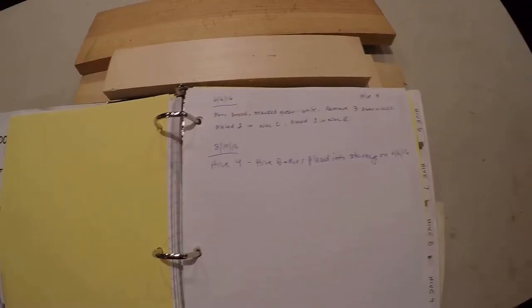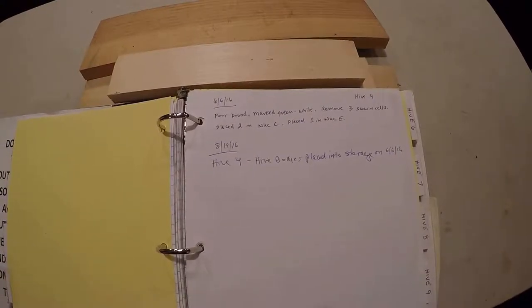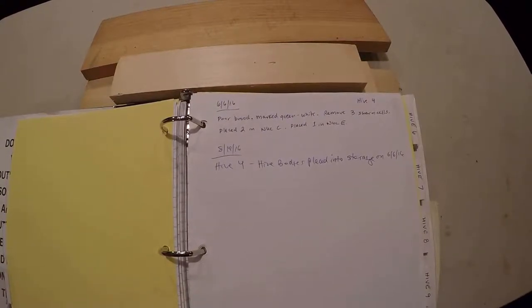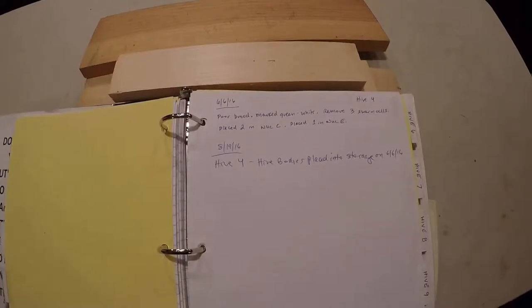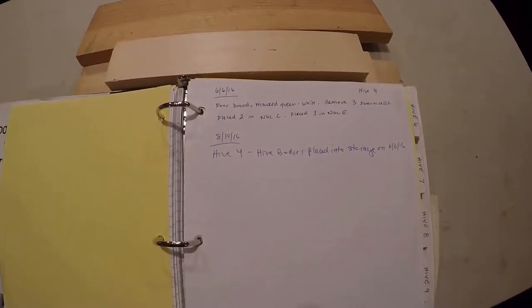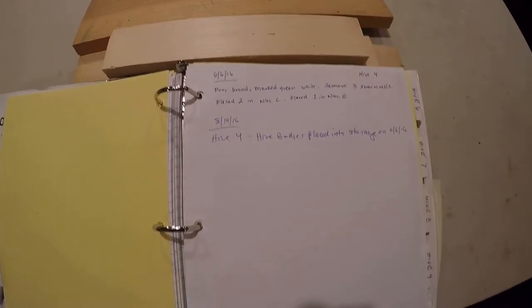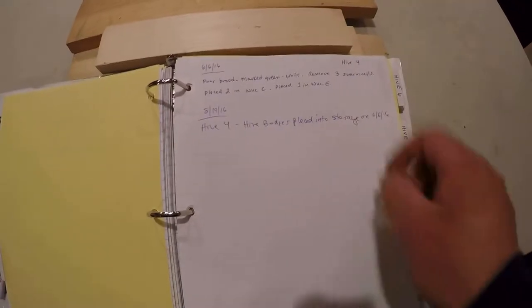Had a swarming tendency. It's like they'd pull a few, have small brood patterns and there'd be a bunch of swarm cells in there, so it was actually bad genetics in that hive, so I was glad to actually get rid of it. So hive 4, move the hive bodies into storage.